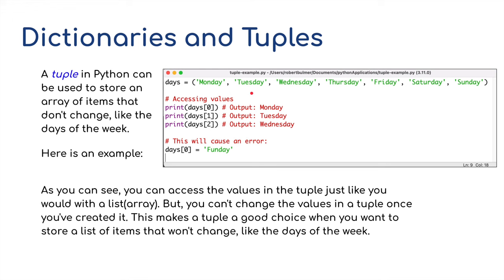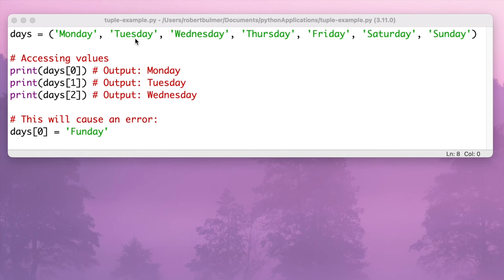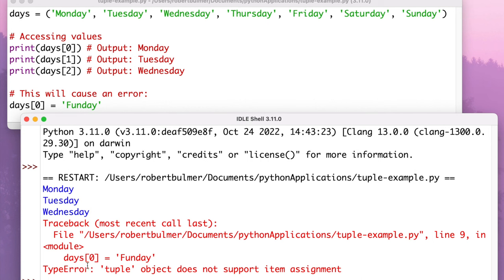And then tuples, and these are very much like constants in terms of variables, but we're talking about a list or an array. But a tuple in Python can be used to store an array of items that don't change, such as the days of the week or the months of the year. As you can see, you can access the values in a tuple just like you would in a list or an array, but you can't change the values in a tuple once you've created it. This makes a tuple a good choice when you want to store a list of items that won't change, such as the days of the week. As you can see, I've created a tuple called days, and I've stored the days of the week, and then I can print out position zero, which would be our Monday, position two, Tuesday, and so on. But this would return an error because I can't do anything with it because these are fixed, these are constant. So I'll run this module, and you can see it's done a traceback error because day zero, we cannot change that. Tuple objects do not support item assignment. We cannot assign a new value to days, at position zero, or any other position.